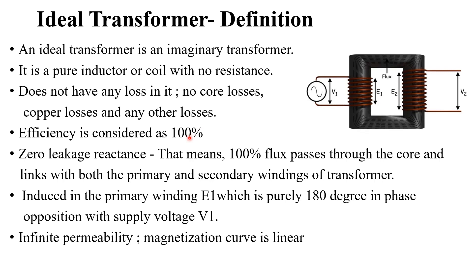First, we can discuss about the definition of ideal transformer. Ideal means clearly it is an imaginary transformer. It is a pure inductor and it has no resistance. Since it is ideal, there will be no core losses. Core losses means there will be no eddy current and hysteresis losses.